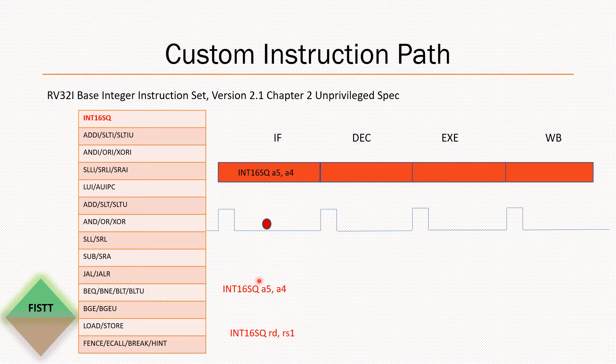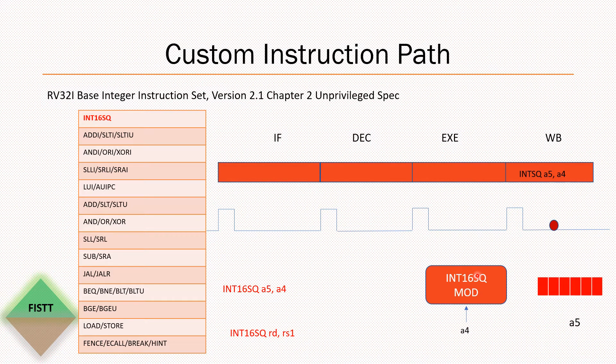In the instruction fetch, this custom instruction has to be fetched and it has to be decoded. And in the execution stage, this is the hardware, let's say we have built. Let's call this as int16 square module. And this A4 input is passed into this and the squared value is calculated. And in the writeback stage, the results are available in the destination register, which is A5.